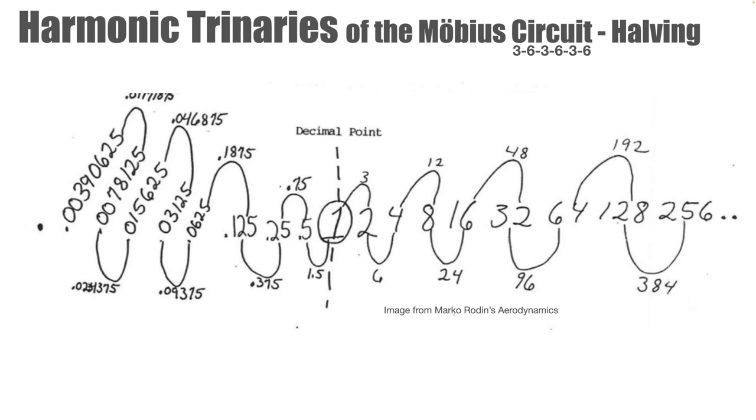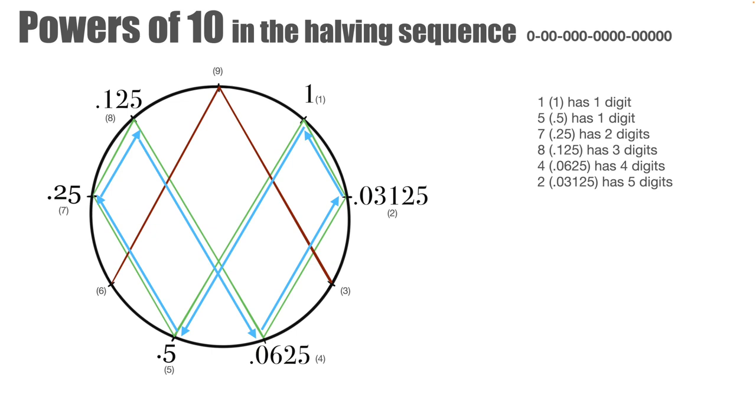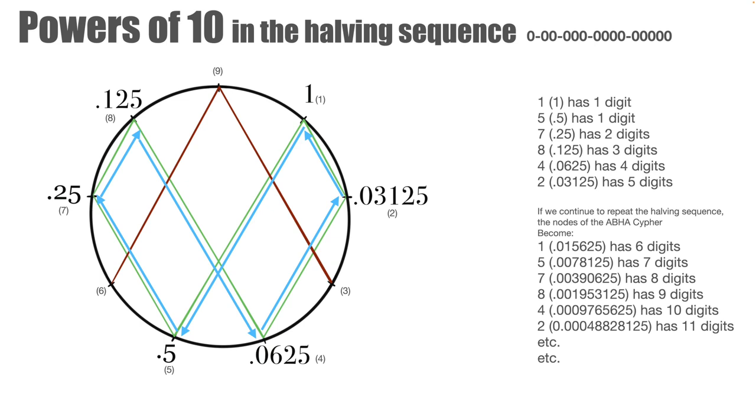The next pattern we're going to look at is the powers of 10. If we look at our halving sequence, we'll notice that there is another pattern to be observed. This shows the sequence of the power of 10 or by the increase of digits with each step taken in the halving sequence. The halving increases the amount of digits with each step. If we continue to repeat the halving sequence, the notes of the Abha cipher become these numbers. We can see an increase in digits or the number of zeros as we move through the halving sequence. That's the powers of 10 pattern, just another one we can derive from the Abha cipher.